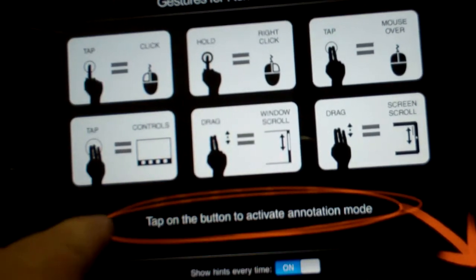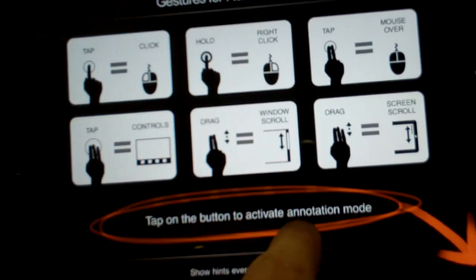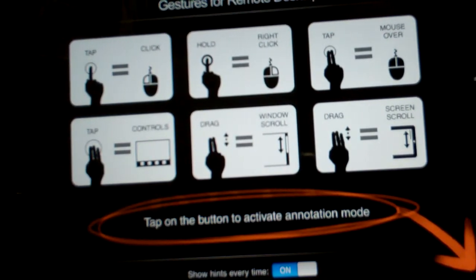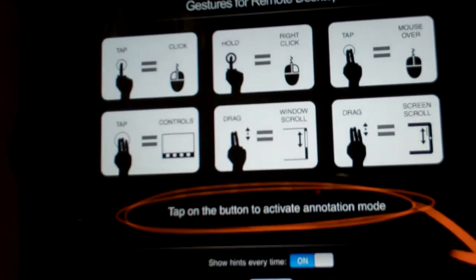You can turn off the hints when you activate. It even shows you tap on this button to activate annotation mode. The annotation mode is one thing that makes Splashtop Whiteboard different than the other Splashtops from before.